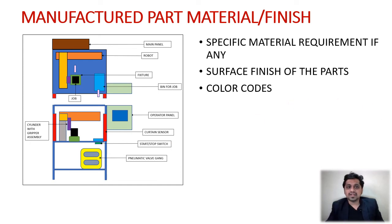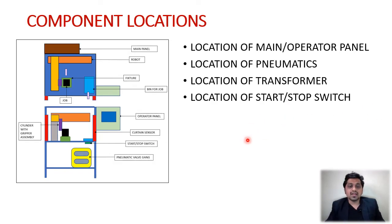You should take some sample part with the color code from the customer. Let's see the next parameter: the component locations. This thing is also important. As we have considered here the pneumatic valve gang on the right side and let's consider it is on the front of the machine. Customer can say I want this on the back side of the machine.